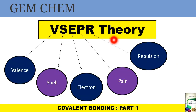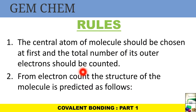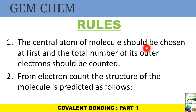Now VSEPR theory stands for Valence Shell Electron Pair Repulsion. The first rule, which helps to determine the structure, states that the central atom of the molecule should be chosen first and the total number of its outer electrons should be counted.